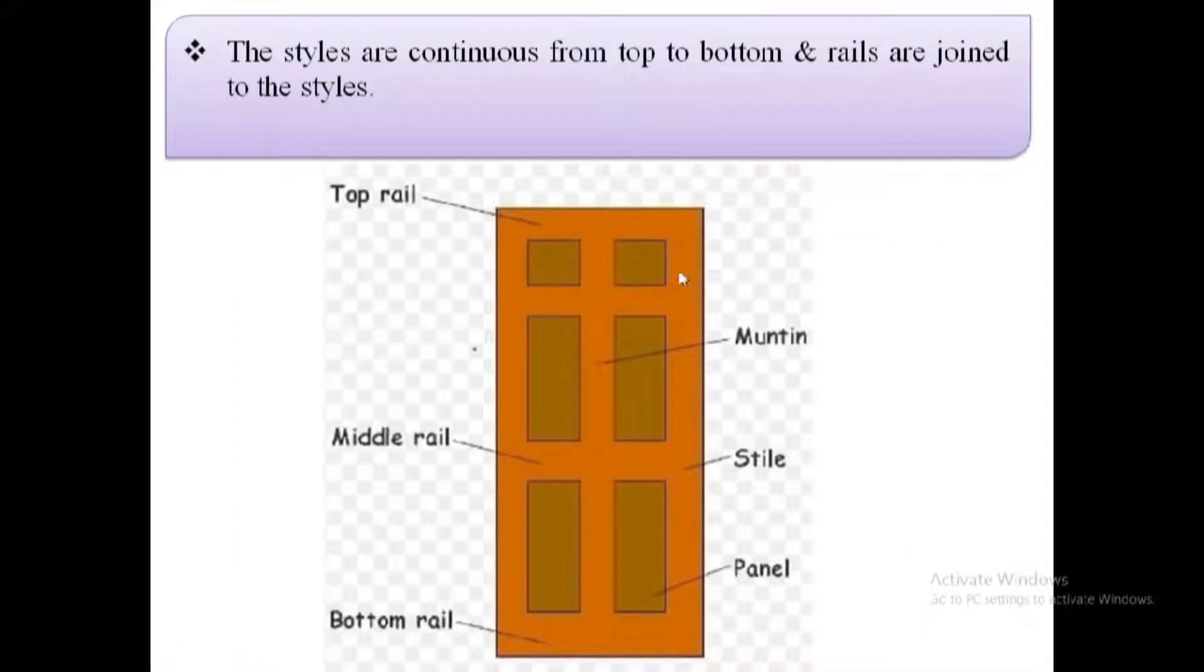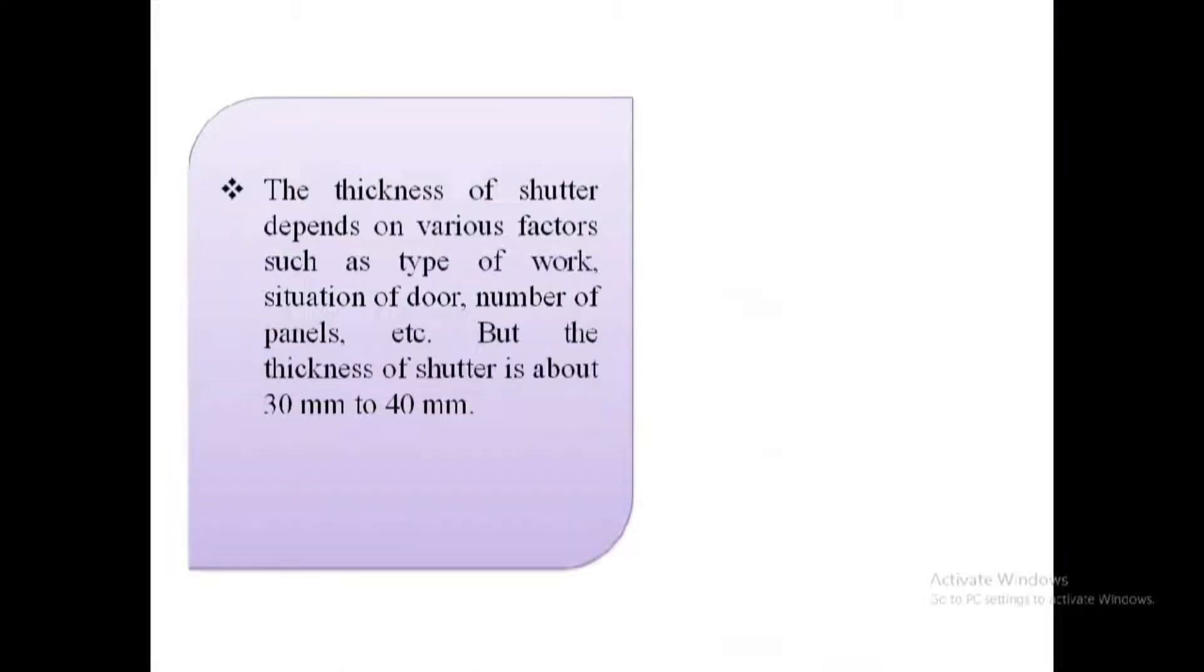Framed and paneled doors. They consist of a framework of vertical members, styles, and horizontal ones, rails, which are grooved along inner edges of the frame to receive the panels. The panels are made of timber, plywood, iron sheets, or even glasses.